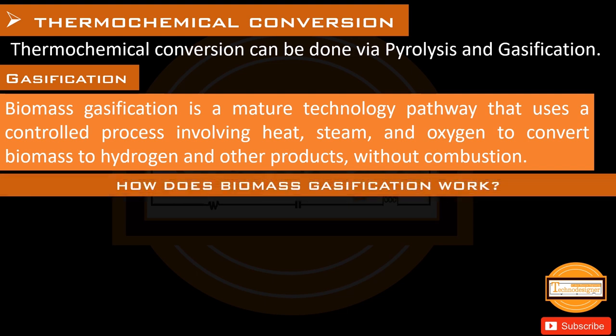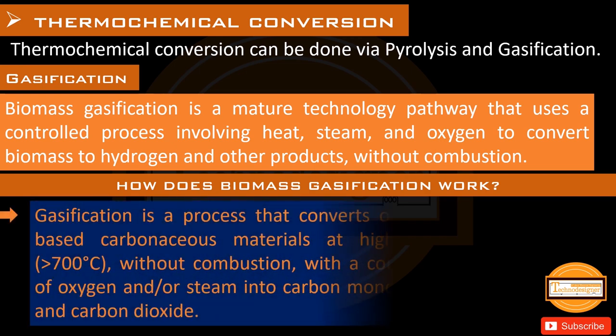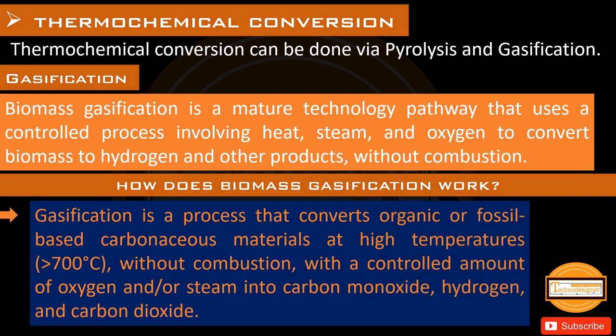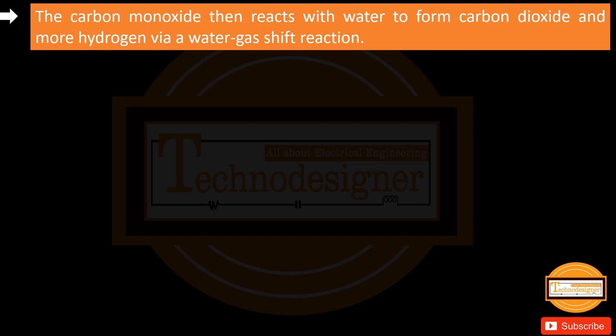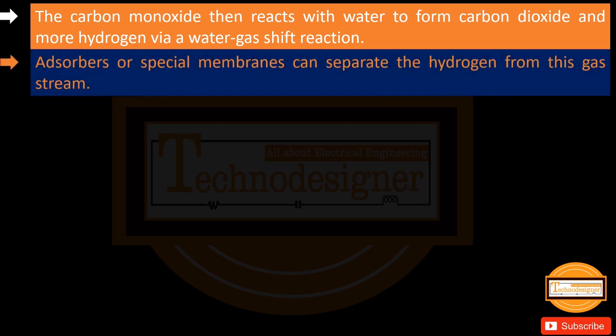How does biomass gasification work? Gasification is a process that converts organic or fossil-based carbonaceous materials at high temperatures greater than 700 degrees Celsius, without combustion, with a controlled amount of oxygen and/or steam into carbon monoxide, hydrogen, and carbon dioxide. The carbon monoxide then reacts with water to form carbon dioxide and more hydrogen via a water-gas shift reaction. Adsorbers or special membranes can separate the hydrogen from this gas stream.